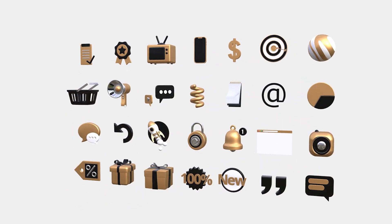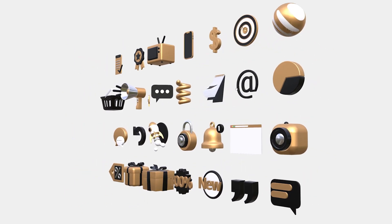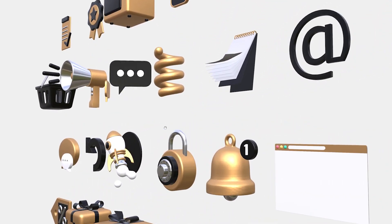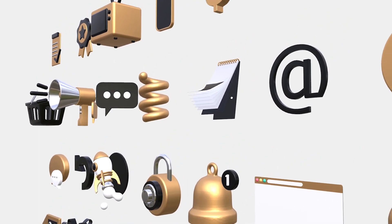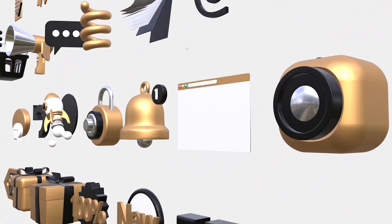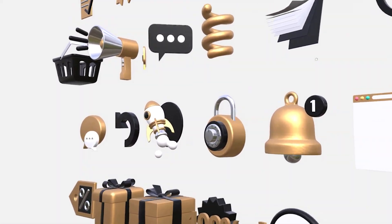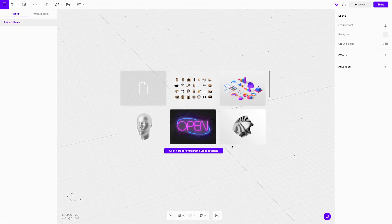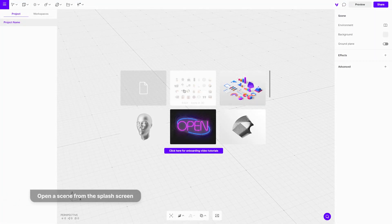To start things off, we will work with these icons from a scene that is already made for you. When you start a new project, you can download it from the splash screen. You don't have to model anything — just customize it.